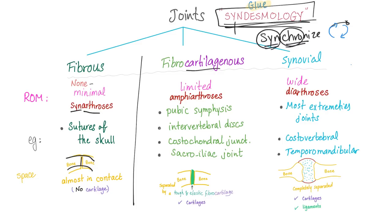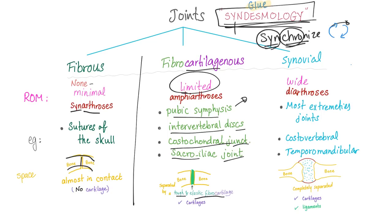Fibrocartilaginous joints provide limited movement — such as the pubic symphysis, the intervertebral disc, the costochondral junction, and the sacroiliac junction. You have two bones with tough, elastic fibrocartilage in between. We call these amphiarthroses — like an amphibian that lives on both land and in the sea.